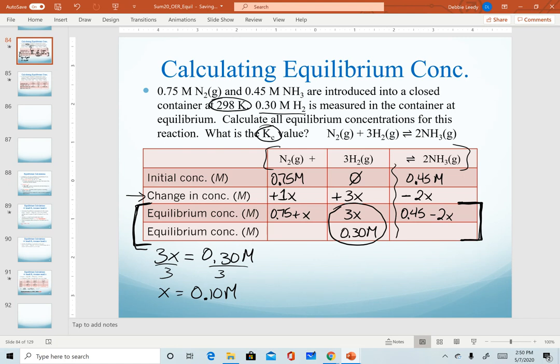Since x is 0.10 molar, to solve for nitrogen, my setup would be 0.75 plus x, which is 0.10, or 0.85 molar. To solve for ammonia, I plug in my x value: 0.45 minus 2 times 0.10. So this is 0.45 minus 0.20, or 0.25 molar.